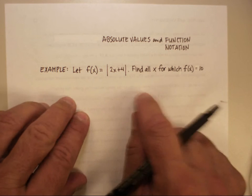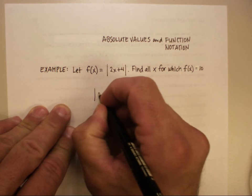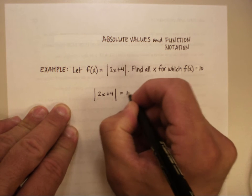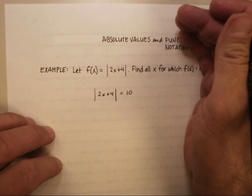So let's rewrite it using that, and you get the absolute value of 2x plus 4 is equal to 10. And at this point it's really easy, isn't it?